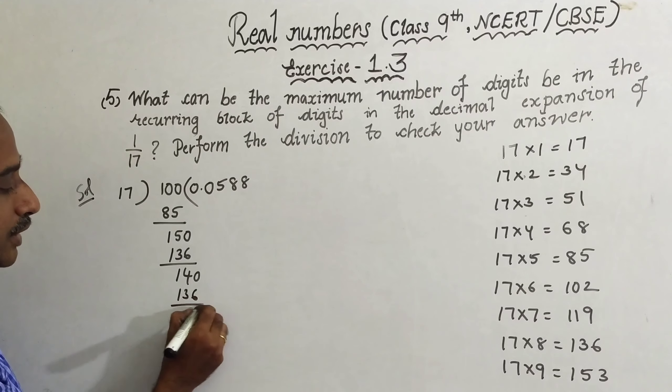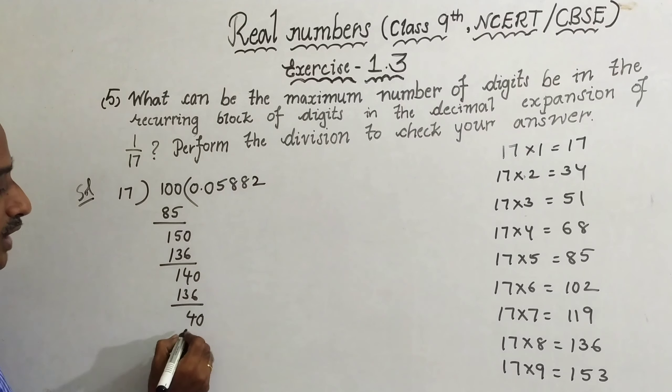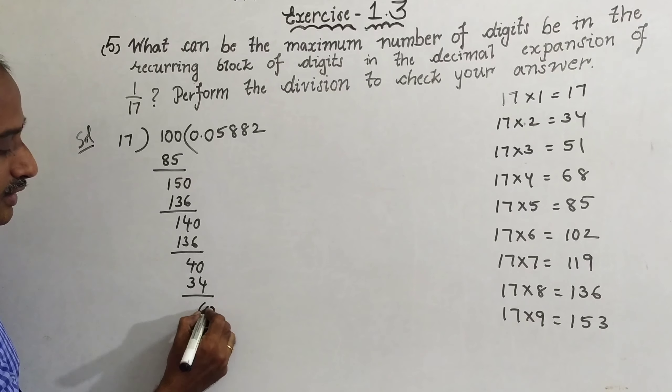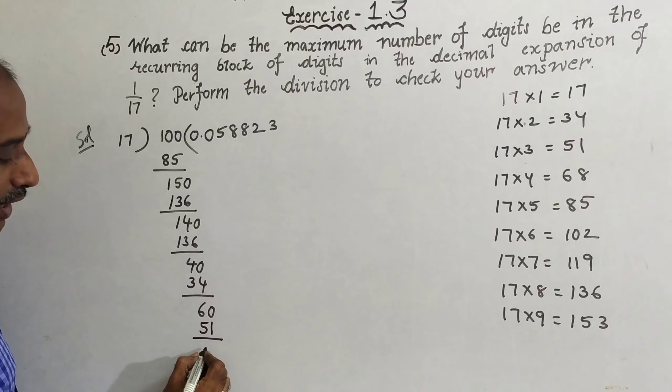Subtract: 100 minus 85 is 15. Take 150. So 150 divided by 17, 17 times 8 is 136. Subtract, 14 will be left. 140 means 17 times 2 is 34. Subtract 6. 60, 17 times 3 is 51. Subtract 9.